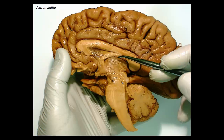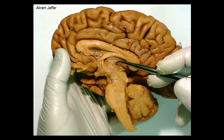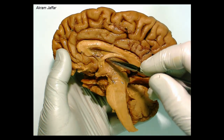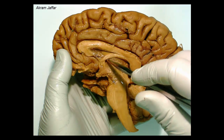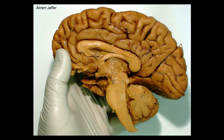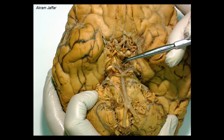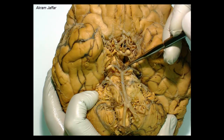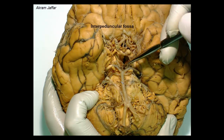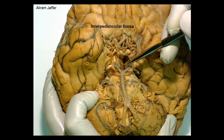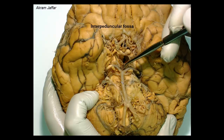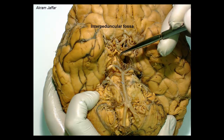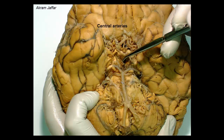Here is the region of the third ventricle, which communicates with the lateral ventricle through the interventricular foramen. Again here, you can see the region of the cerebral peduncles, and in the interpeduncular fossa, we can see a tuft of small vessels arising from the circle of Willis.